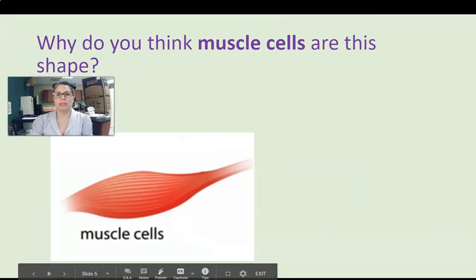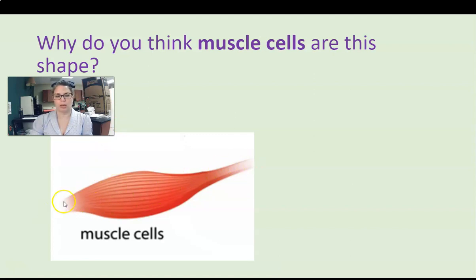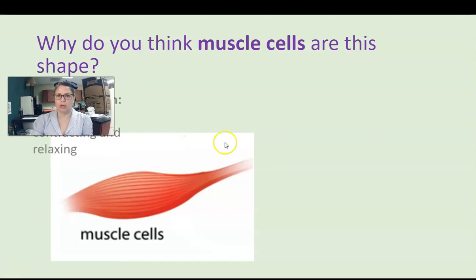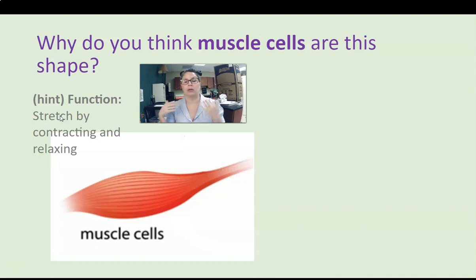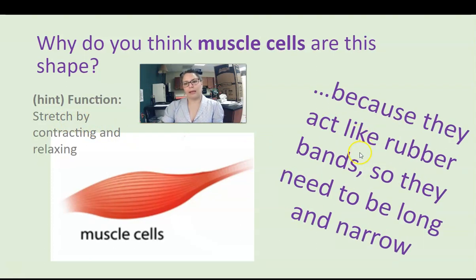Why do you think this muscle cell is the shape that it is? It's long — it's one cell. Here's a hint: they stretch by contracting and relaxing. So why do you think these muscle cells are this shape? Well, it has a lot to do with their function. They act like rubber bands, so they pretty much have to look like rubber bands — they act like them, so they kind of look like them. They need to be long and narrow.